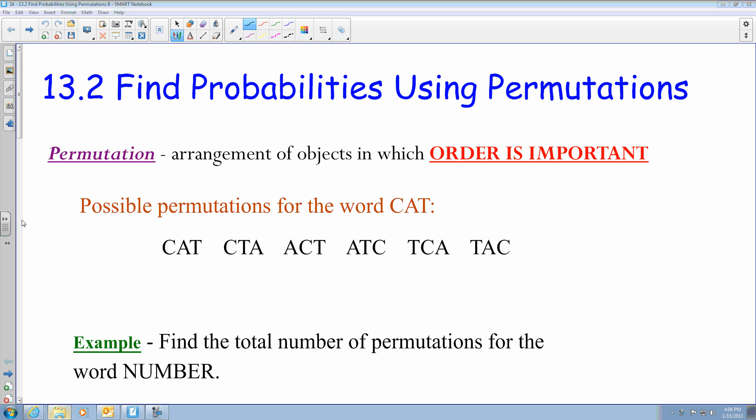If you look at our example here in the notes, we wanted to find the possible permutations for the word CAT. This means that we can place any of the letters C, A, or T in any order, and I wanted to see how many possible orders it could make. If you look at the notes, it shows that there are six arrangements for the word CAT. So that means there are six arrangements for a three-object item.